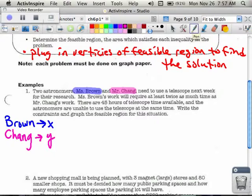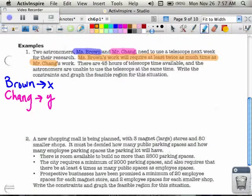So now we know that we're going to call those two people those things. Afterwards, we see that down below here it says, Ms. Brown, her work will require at least twice as much time as Mr. Chang. So if Ms. Brown is X and she has to be at least twice as much as Mr. Chang, what that's saying is that I know that Ms. Brown, the X, will be at least, which means greater than or equal to, twice what Mr. Chang is.